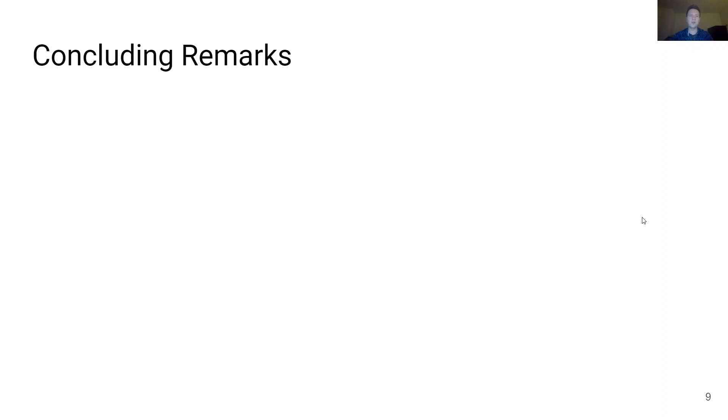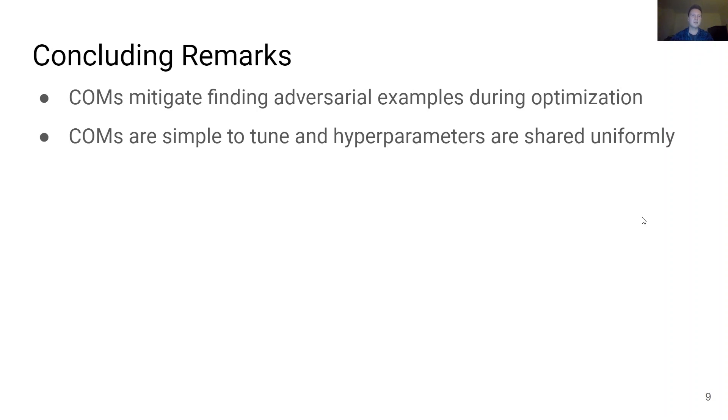In conclusion, we propose conservative objective models for offline model-based optimization, which mitigate finding adversarial examples during the optimization of designs. COMs are simple to tune and only require training a single predictive model and share hyperparameters uniformly across all discrete and continuous tasks, respectively. All the while, COMs find solutions that perform 16% better than the next best offline model-based optimization method that we tested.